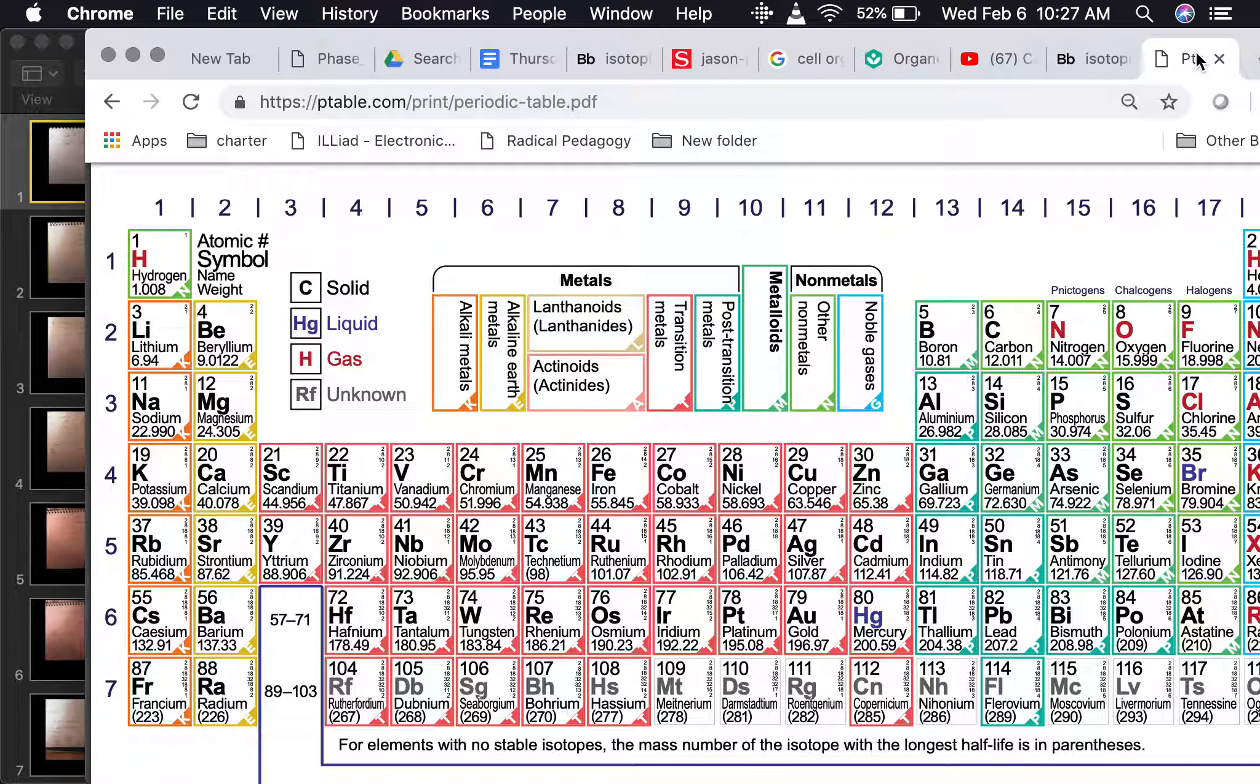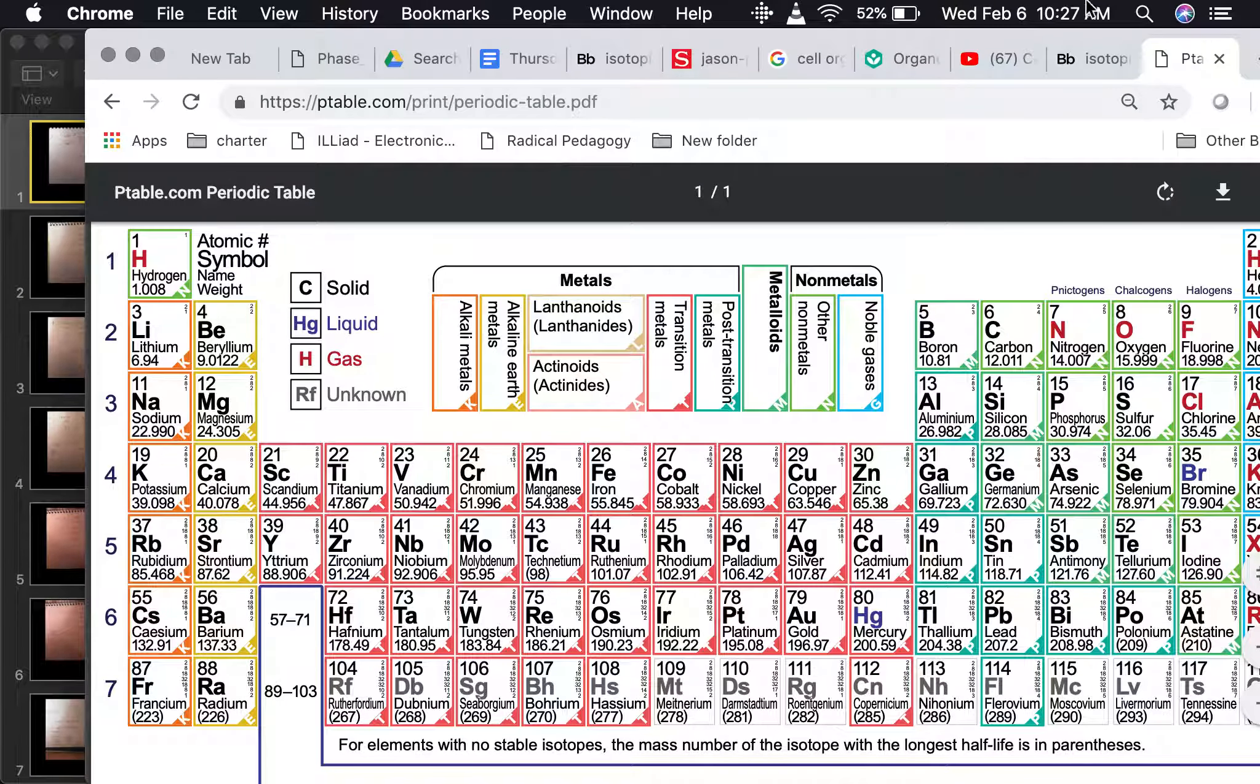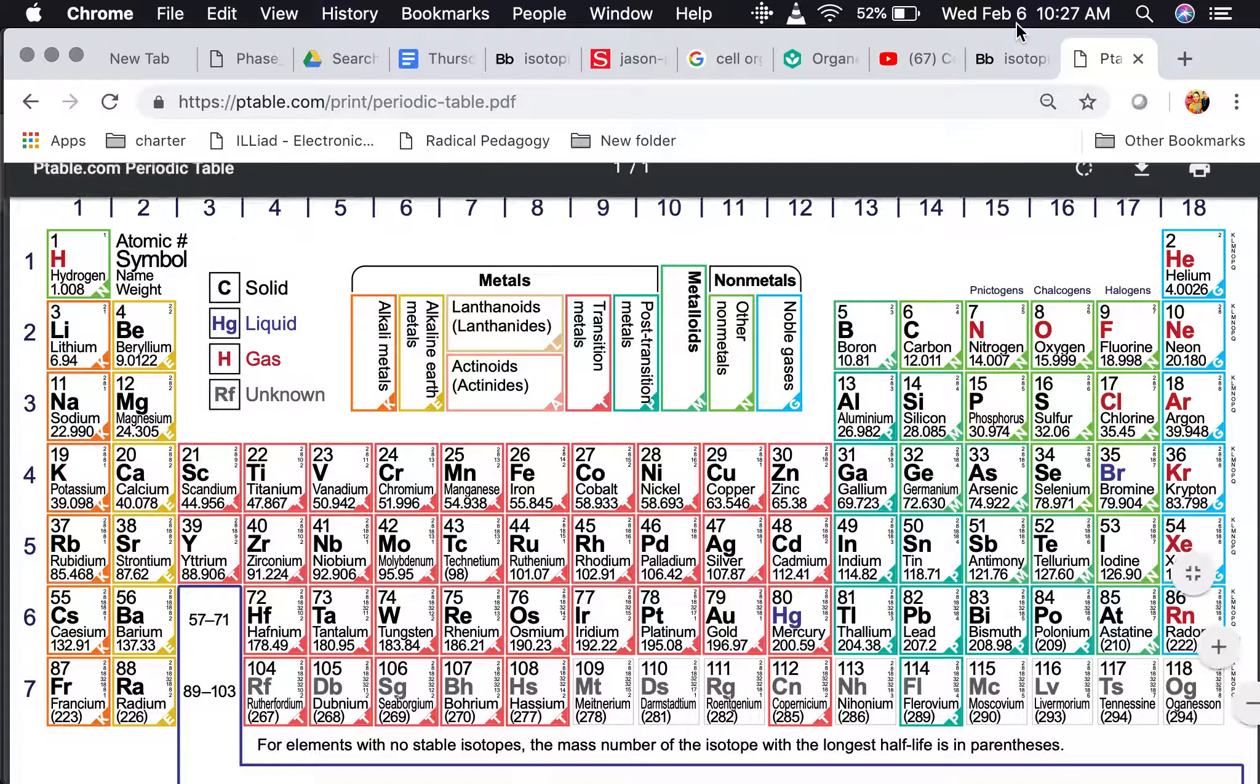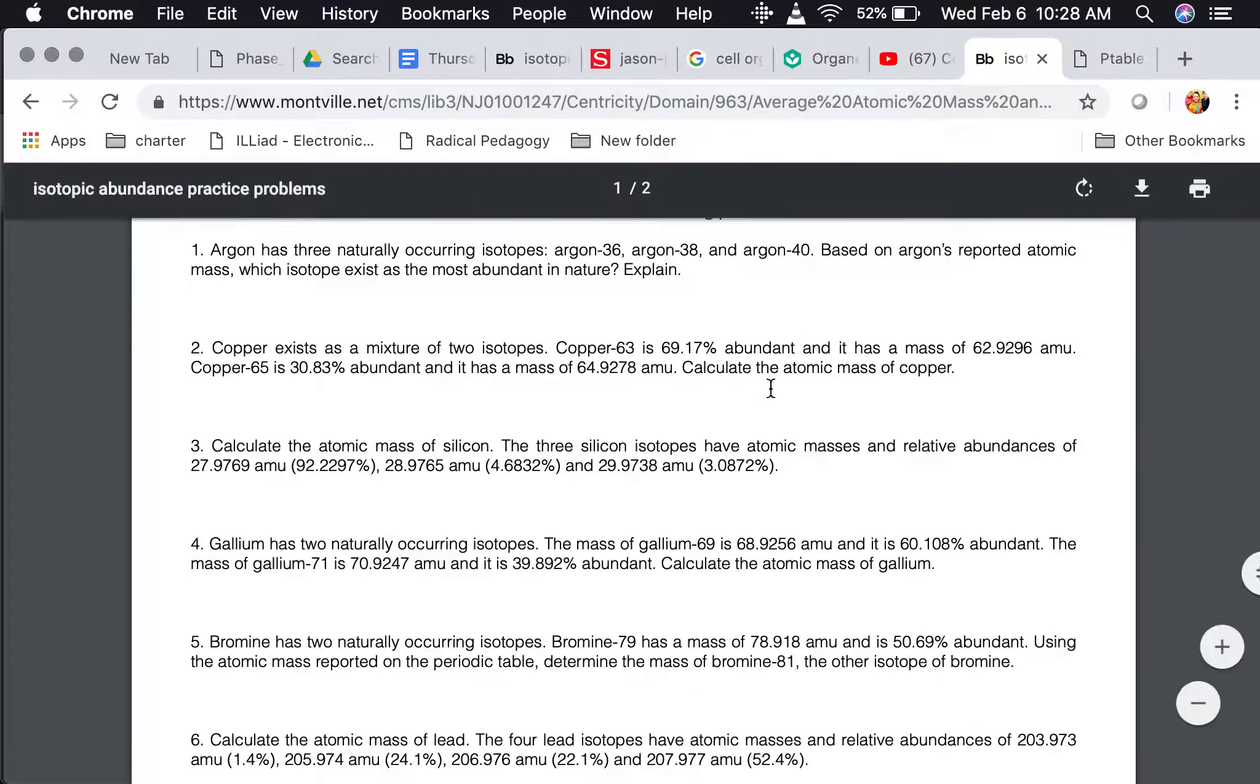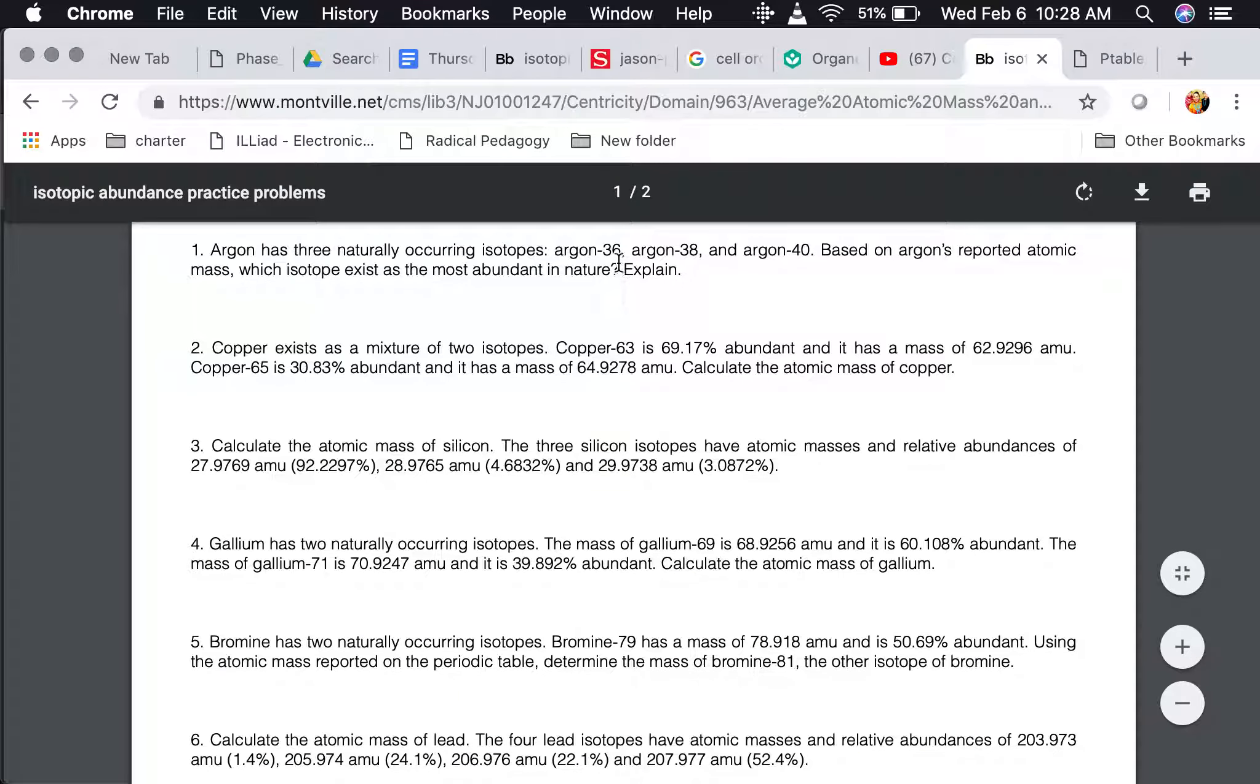The way we would figure this out is we would look at argon. If you pull out your periodic table, we would find argon. So argon is right here, number 18, and its atomic mass is 39.948. So that number, if we look at the isotope options that we have, we have 36, 38, and 40.